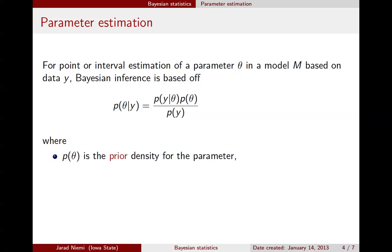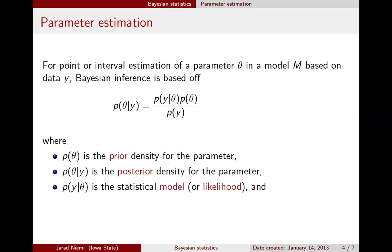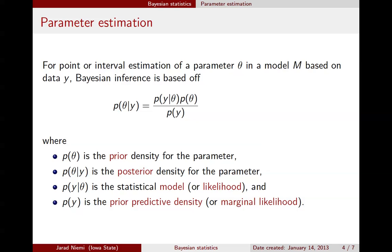The terminology we use to describe the components in this equation: the density for theta — p(theta) — is the prior density for the parameter, often referred to as the prior. p(theta|y) is the posterior density for the parameter, typically referred to simply as the posterior. p(y|theta) I like to call the statistical model; others might call this the likelihood. p(y) is the prior predictive density, often referred to as the marginal likelihood.